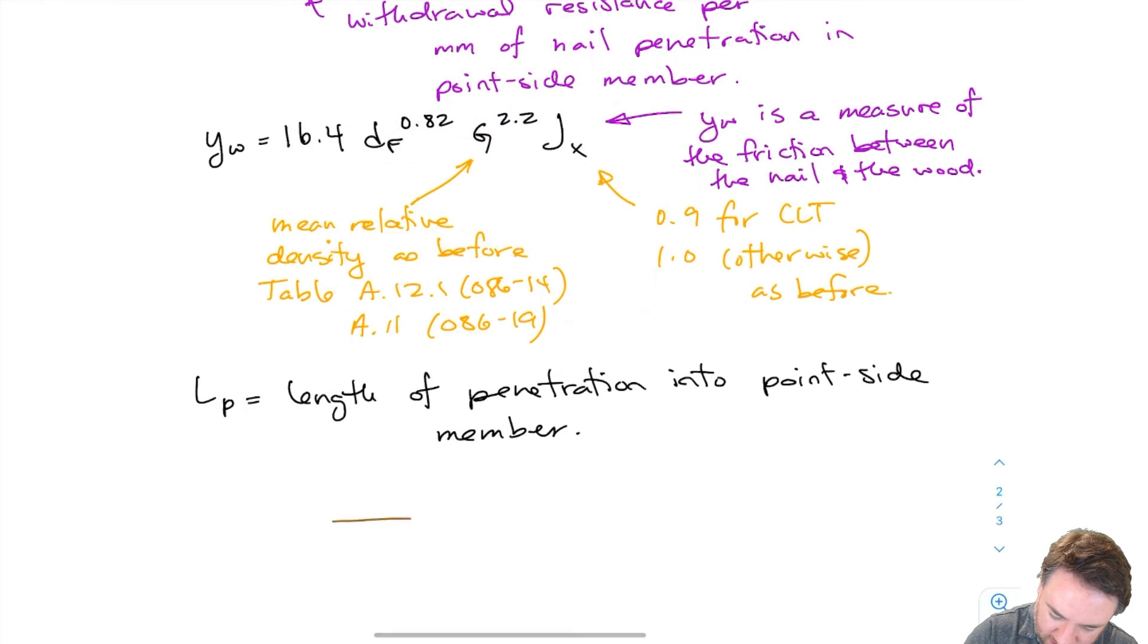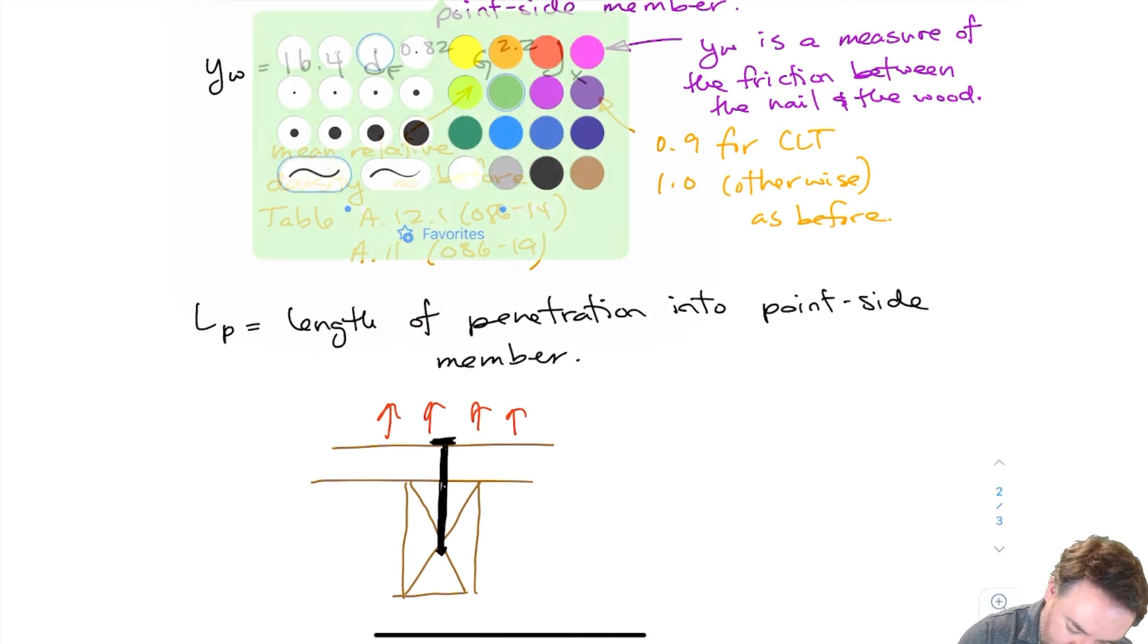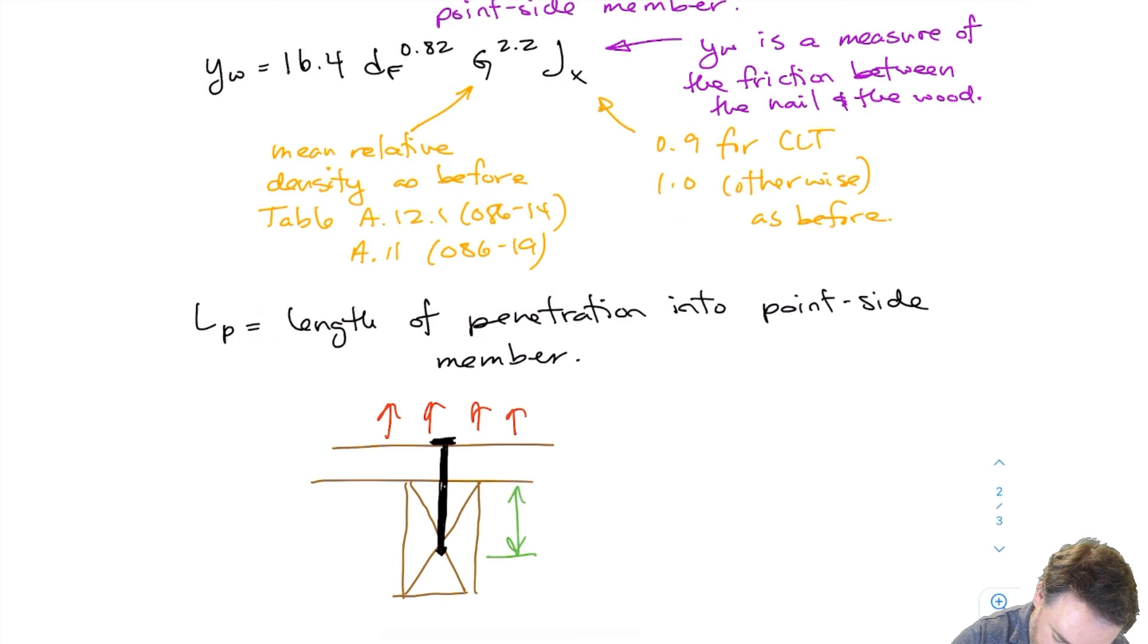Okay so then we have LP. So if I were to draw what LP looked like, here is a situation where I have a member on top, something or sheathing or something, and then I have my nail which goes through the first piece and holds that first piece, the top piece, to the bottom piece. So it's embedded in the bottom piece here and let's say I have some uplift force that I'm designing this for withdrawal. Then my length of penetration is this distance here, the length of penetration into the point side member. And obviously in this case this here is the point side member.